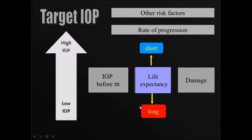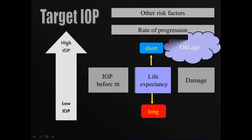Life expectancy - if you diagnose glaucoma at a young age, then the life expectancy is long, then we go for a low IOP. But keep in mind, old age is a risk factor for glaucoma progression.